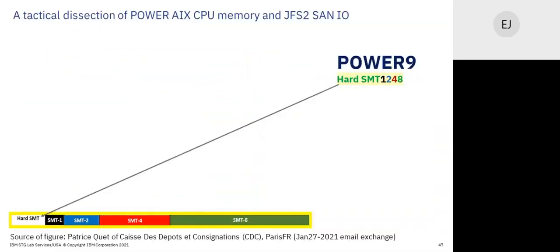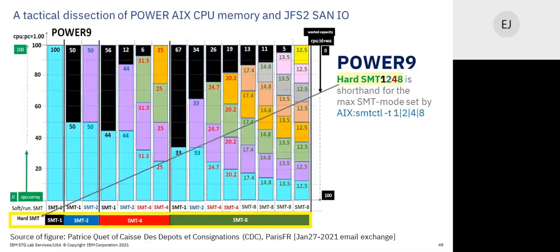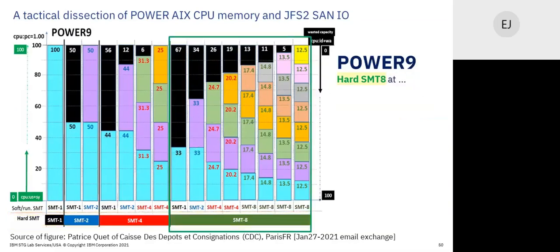Hard SMT is my shorthand for the max SMT mode setting. We have four different max SMT mode settings — we are now SMT8 by default, so I call that hard SMT8. Soft SMT1 means your maximum SMT mode is SMT8, but in reality you're running mostly at SMT1. This acknowledges that our SMT modes are constantly changing — each individual virtual CPU on the core can be independently in a different SMT mode at any instantaneous moment.